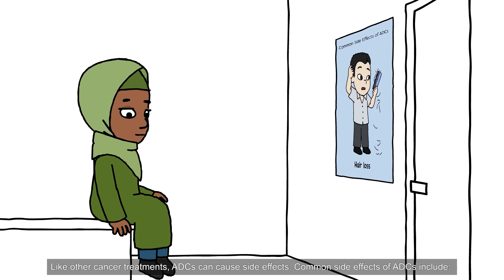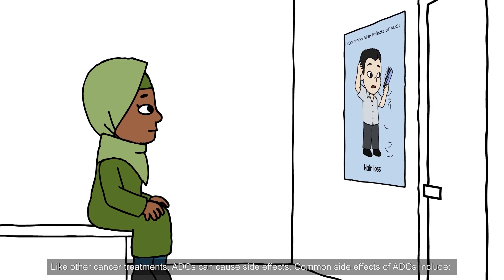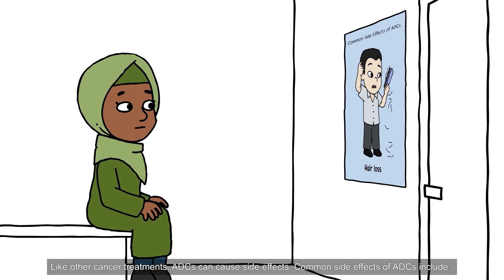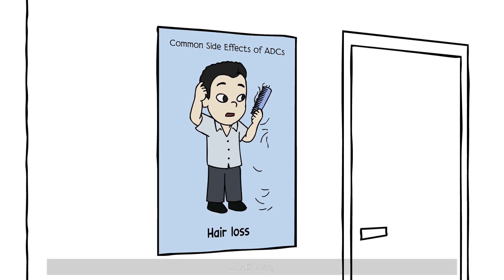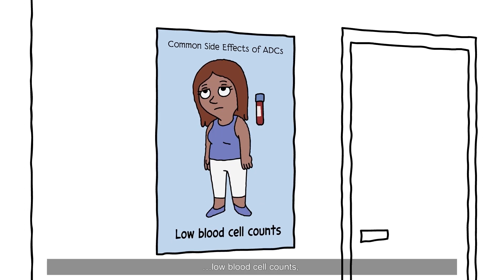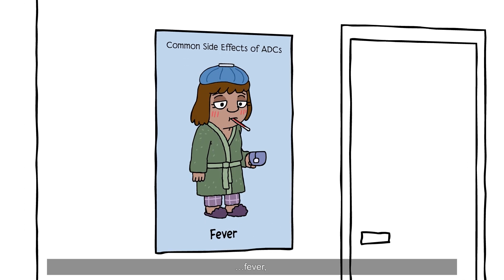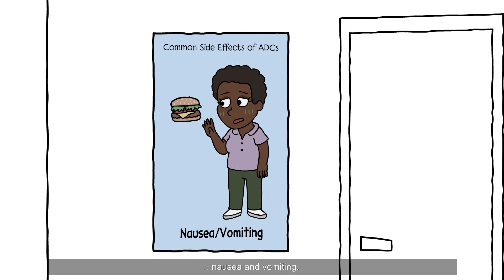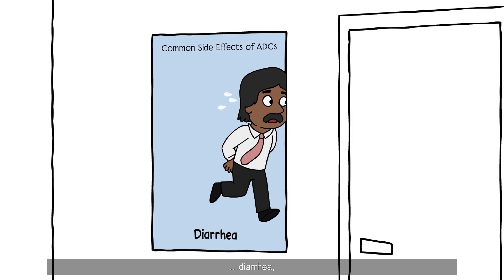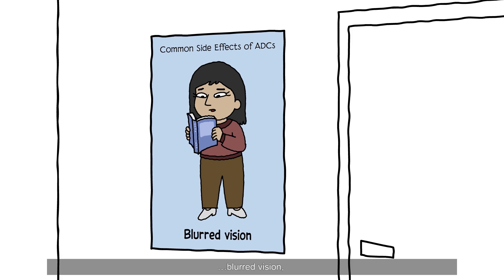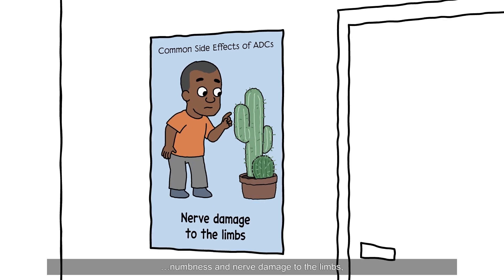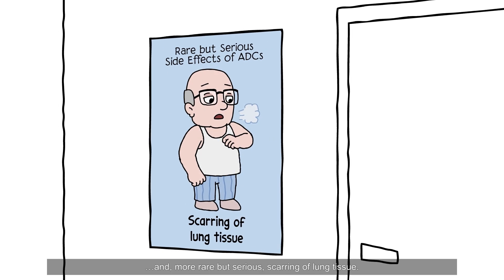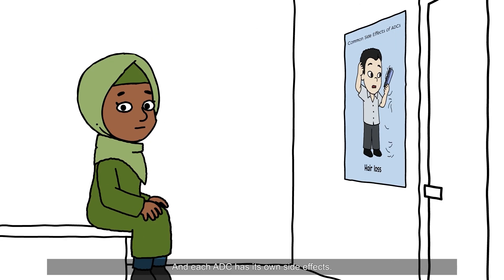Like other cancer treatments, ADCs can cause side effects. Common side effects of ADCs include hair loss, low blood cell counts, fever, inflammation of the lining of the mouth and gut, nausea and vomiting, diarrhea, blurred vision, numbness and nerve damage to the limbs, and more rare but serious scarring of lung tissue. Each ADC has its own side effects.